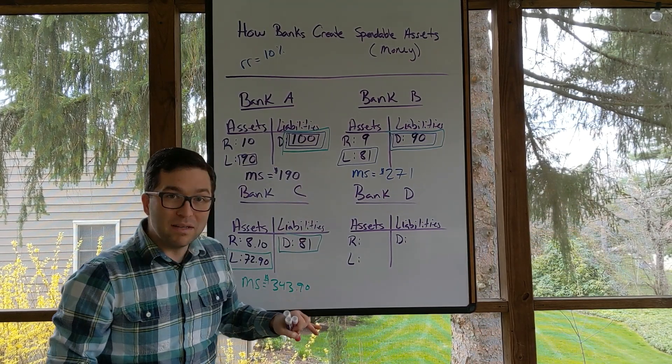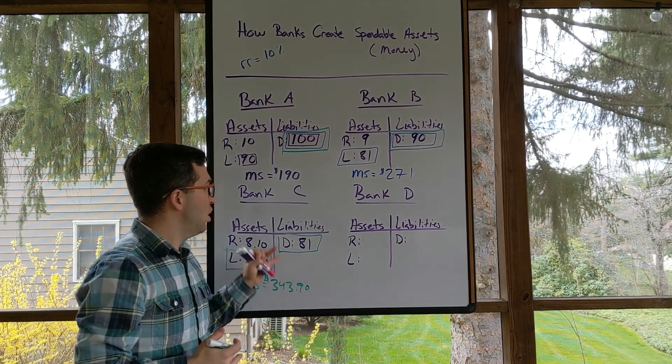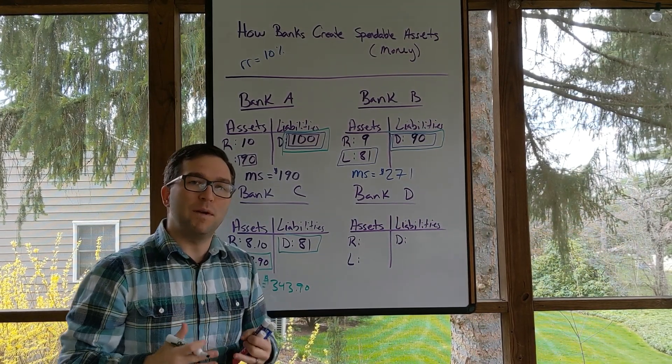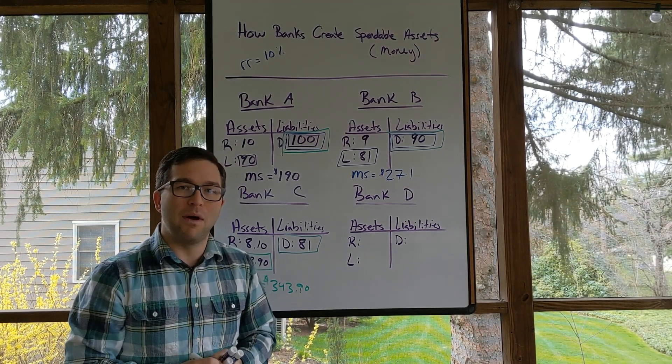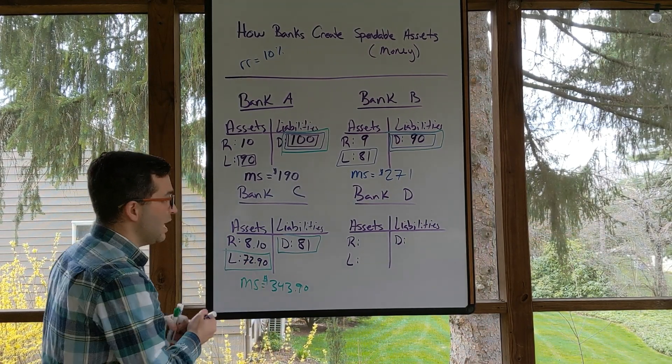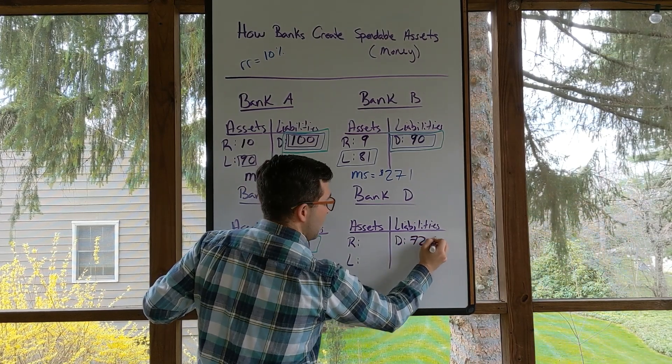Now, if at any point the bank were to not make a loan or an individual were not to deposit it, then this process would stop. That's why what we're figuring out right here is the simple deposit multiplier, which is the maximum amount that money supply can grow. Let's see another one again just to keep this going. So if we deposit that $72.90,